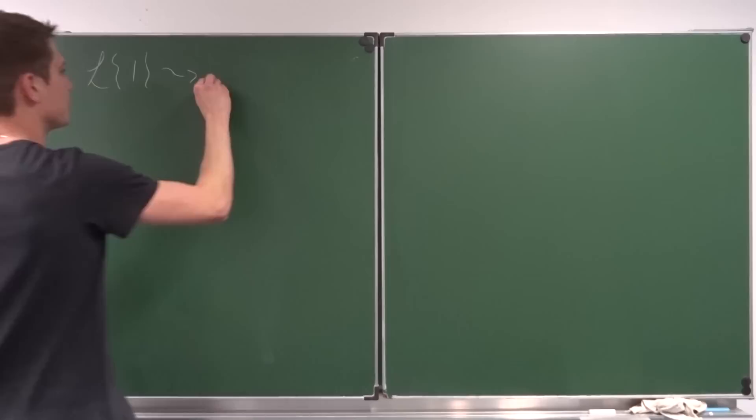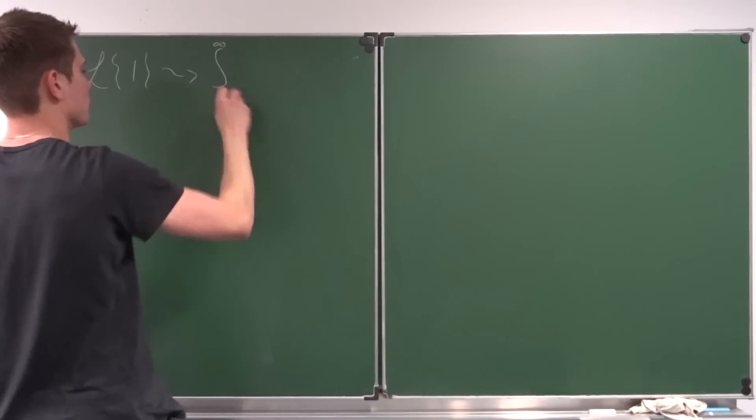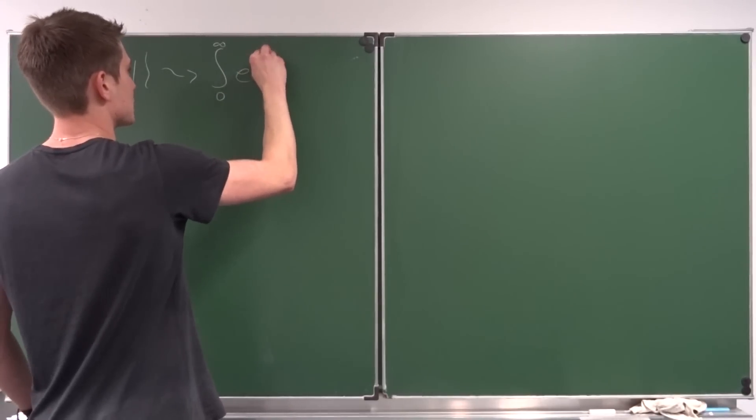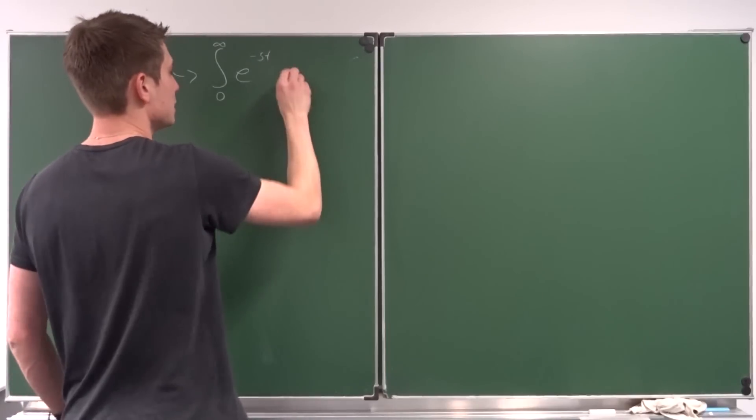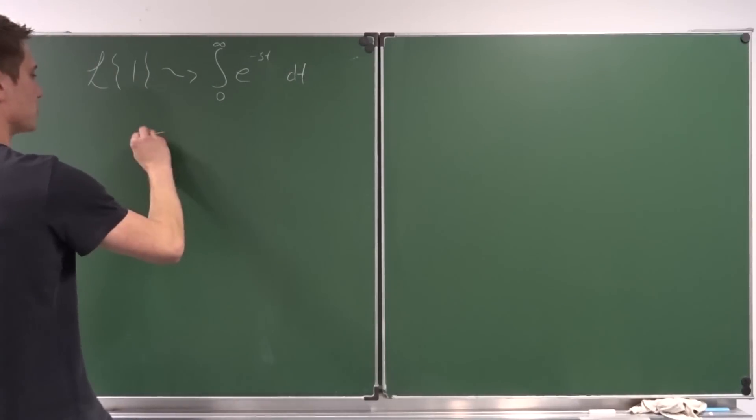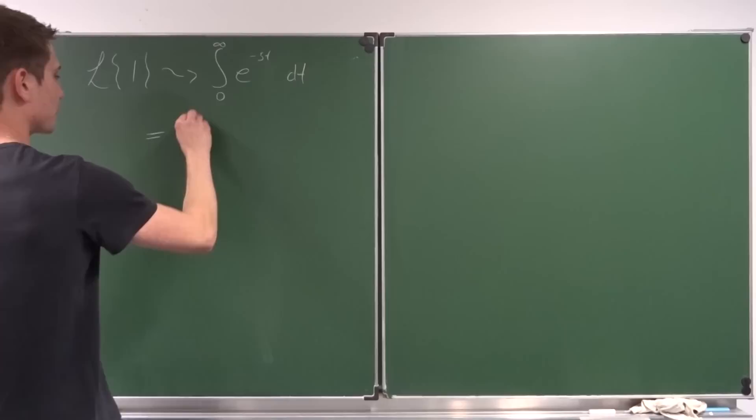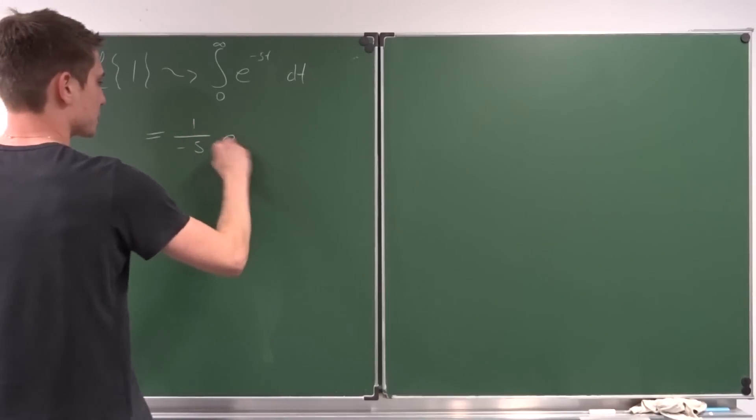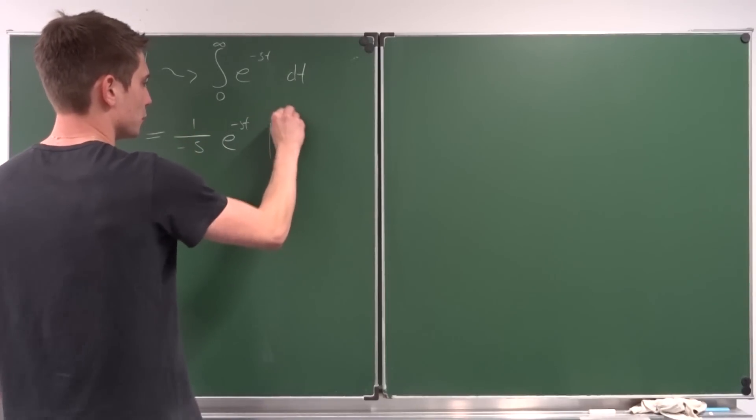The Laplace transform of one is just an improper integral from zero to infinity of e to the minus st times one, so that's just e to the minus st dt. And then we are integrating this. So this is just one over minus s times e to the minus st from zero to infinity.